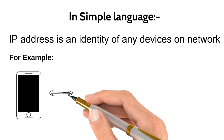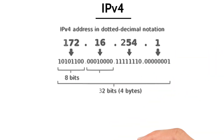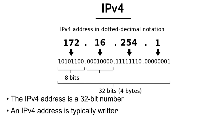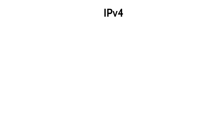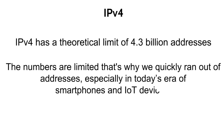In simple language, an IP address is the identity of any device on a network — for example, your mobile device, smartphone, computers, printers, or any IoT devices. So what is an IPv4 address? The Internet Protocol version 4, generally referred to as IPv4, was developed in the 1980s. IPv4 addresses comprise four numbers, each ranging from 0 to 255, separated by periods.